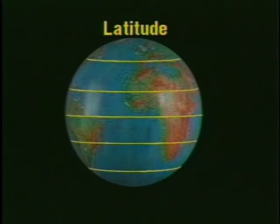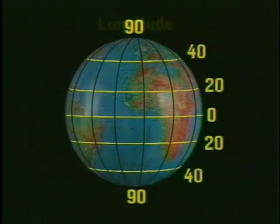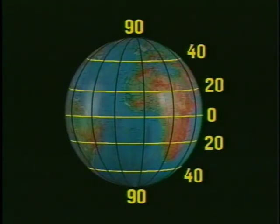You can do this by using lines of latitude, which are parallel to the Earth's equator, and lines of longitude, which run from the North Pole to the South Pole. Using the equator as a starting point, we can plot lines of latitude north and south from zero degrees at the equator to 90 degrees at the poles.